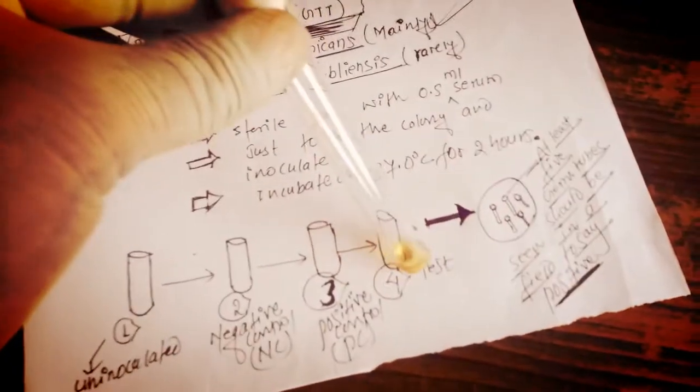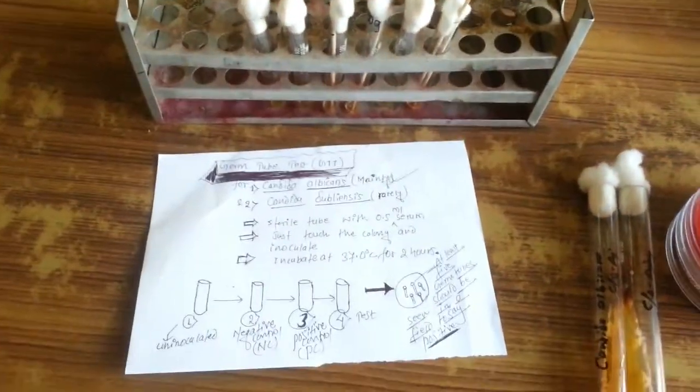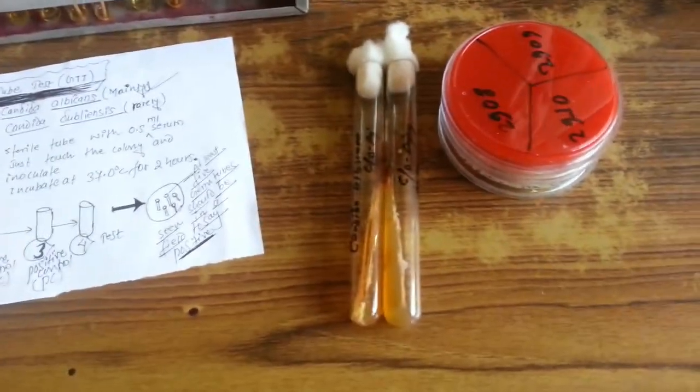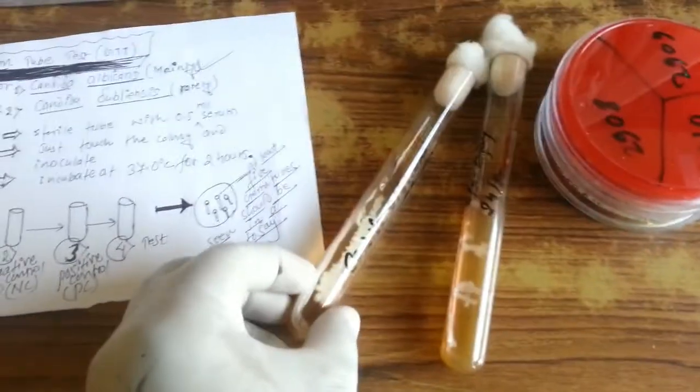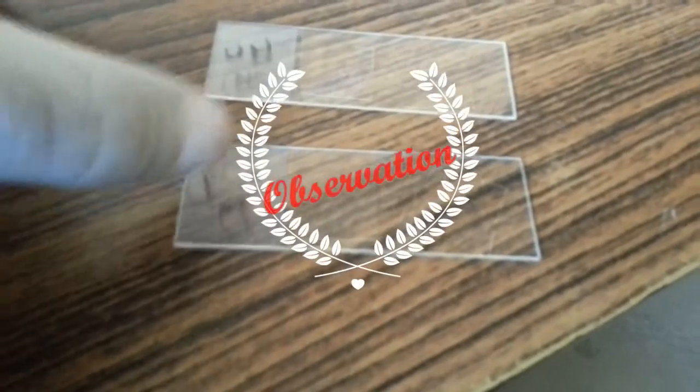After that, a drop of serum yeast culture was transferred to a glass slide and covered with cover glass from level test tube, that is un-inoculated, test, negative control, and positive control respectively.